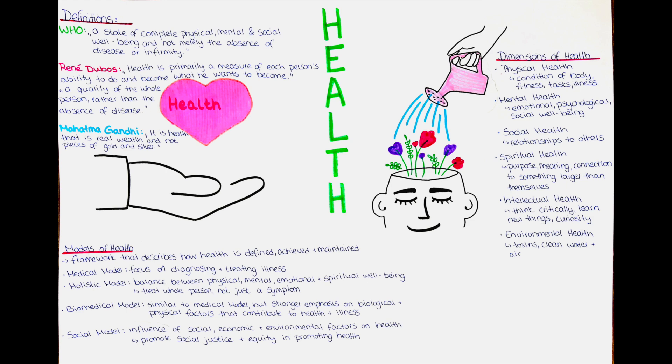There are several models of health, each with its own strengths and limitations. The biomedical model of health focuses on the physical aspect of health and views health as the absence of disease or illness. It places a strong emphasis on the role of medical interventions, such as drugs and surgery, in treating illness and restoring health. In contrast, the social model of health recognizes the influence of social, economic and environmental factors on health and emphasizes the importance of addressing the underlying causes of health disparities.